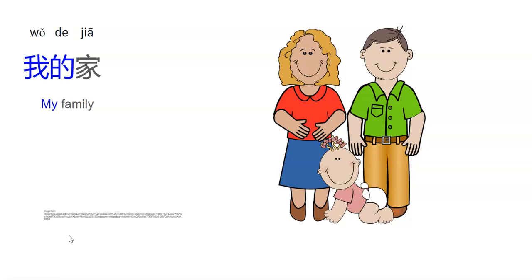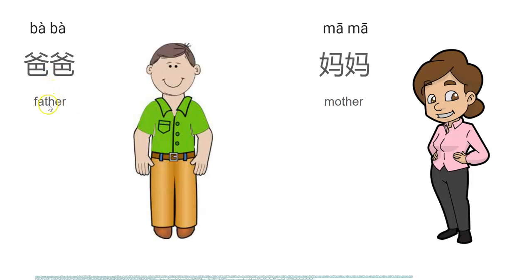First, how to say 'family'? Jiā. And then, how to say 'my family'? My comes from I, so it's wǒ, and 'my' is wǒdə. And how to say family? Jiā. So let's combine them. My family: wǒdə jiā. Wǒdə jiā.